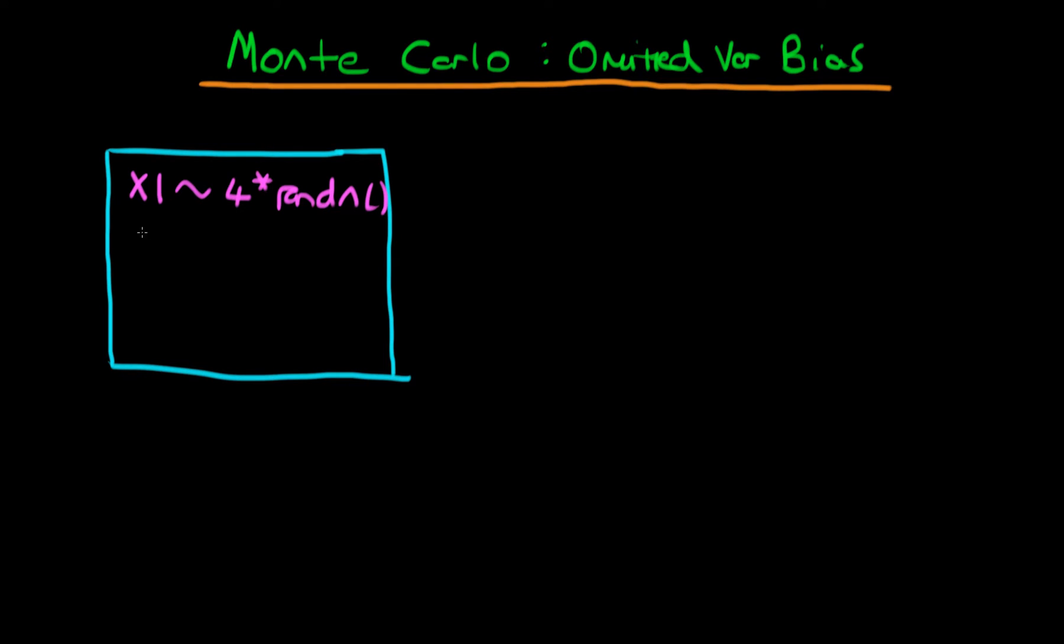And then what we're going to do is we're going to generate another variable, X2, which is just equal to X1 times some sort of small number, so perhaps times 0.25, plus some sort of normal random error as well. So the idea here is that I'm generating a second independent variable which is correlated with the first one, but it's not perfectly correlated because we've got this random error component to it as well.